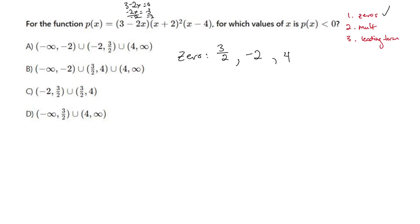Now we have to find the multiplicity of each. The multiplicity of the first factor is just 1, nothing fancy. The multiplicity of the second factor is 2. The multiplicity of the third factor is 1, easy peasy.